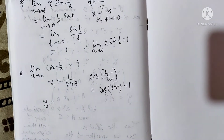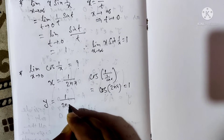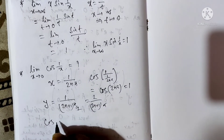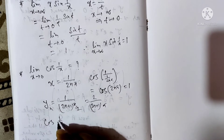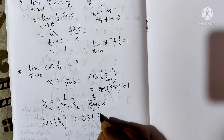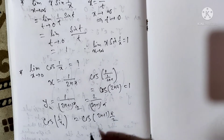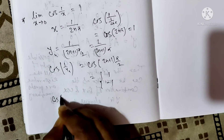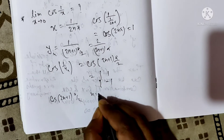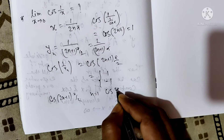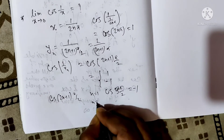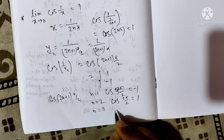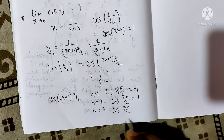Now let y equal 1/((2n+1)·π/2), which equals 2/((2n+1)·π). For this sequence, cos(1/x) gives values alternating between 1 and -1: for n=1, cos(3π/2) = -1; for n=2, cos(5π/2) = 1; for n=3, cos(7π/2) = -1.